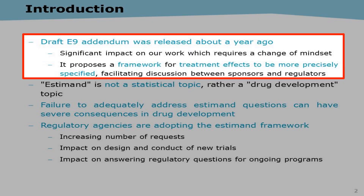It was released back in 1998, but has never been revised since then. Mid last year, the first draft revision of the E9 came out on the topic of estimands and sensitivity analysis in clinical trials. This draft addendum will have a significant impact on our work, as it comes along with a much needed change of mindset.